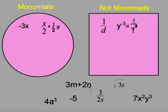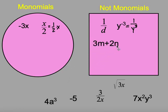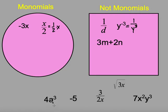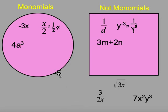Right here I have 3m plus 2n. As soon as I have addition, it's no longer a monomial. That falls into a polynomial — it has two terms, so it cannot be a monomial. If I have 4a to the third power, that is just a product of a number and variables, so it goes into monomials. Negative five by itself — one term — also goes into monomials.